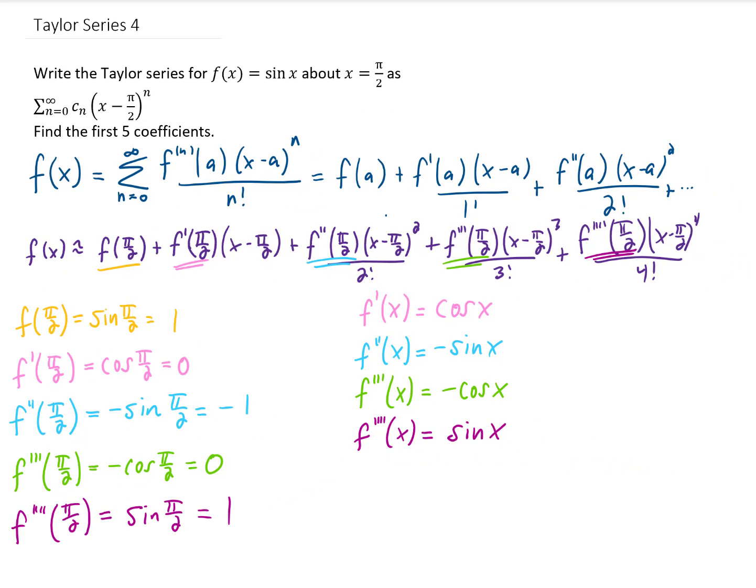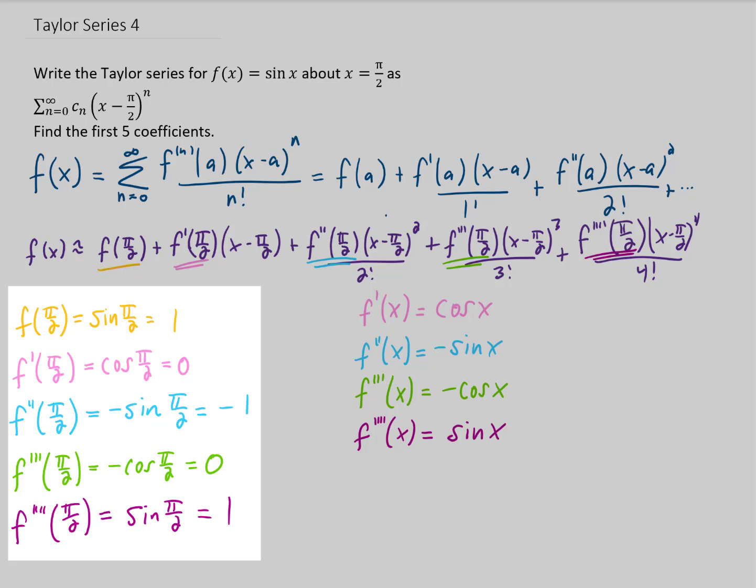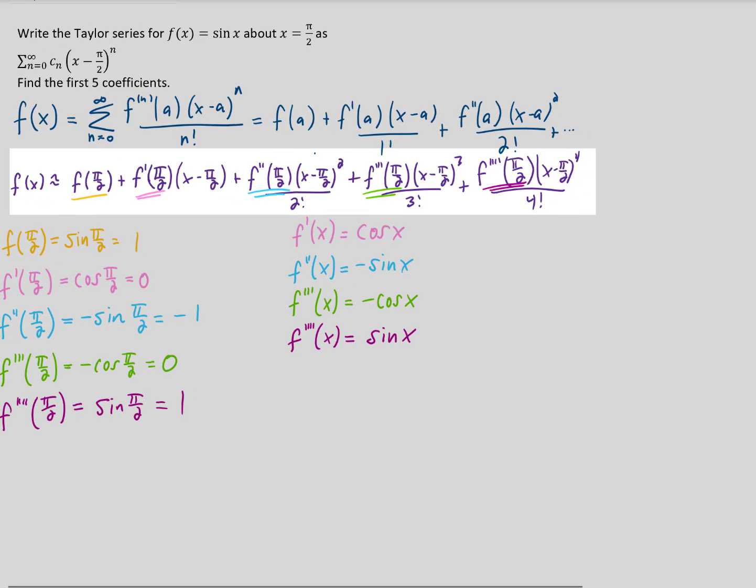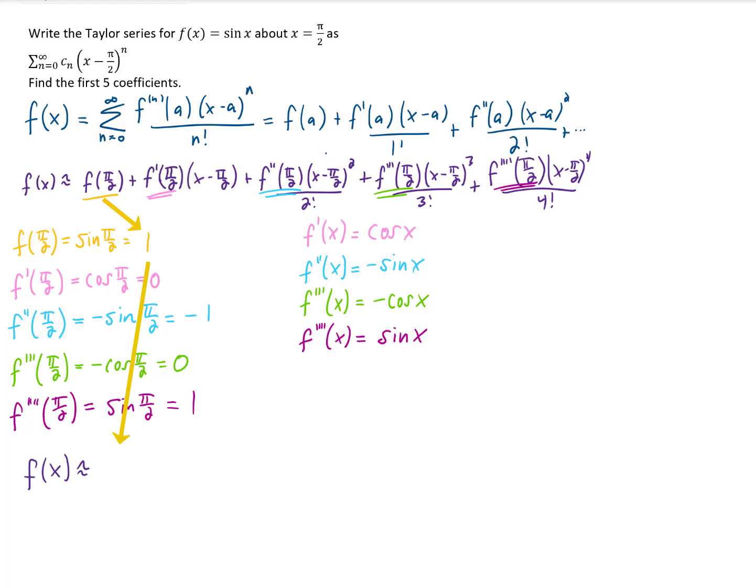So what we need to complete this Taylor series are these function values over here. So what I'm going to do is I'm going to take those function values, I'm going to plug them into each term in our Taylor series. f of pi over 2 is our first term, and that is just 1.